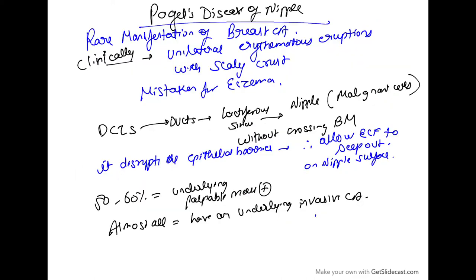Paget's disease of nipple is a rare manifestation of breast carcinoma. Clinically it looks like erythematous eruptions on the nipple with scaly crust. It is often mistaken for eczema, but actually it is ductal carcinoma in situ. The cells pass through the ducts to the lactiferous sinus, then exfoliate over the nipple, and these are malignant cells.